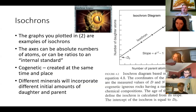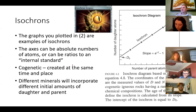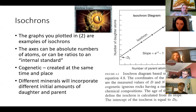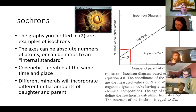I looked for some sort of fun image for isochrons and found this illustration from a Magic card. When you get these straight lines — when you have a bunch of samples from a strata, a rock layer, and you're making the assumption that they're all the same age — when you plot the amount of daughter versus the amount of parent, you end up getting a straight line if they are indeed all the same age.